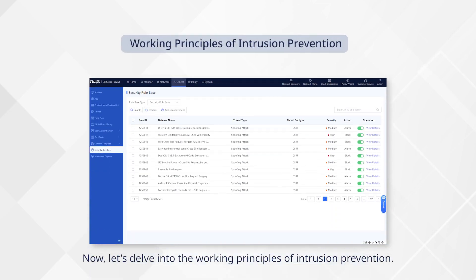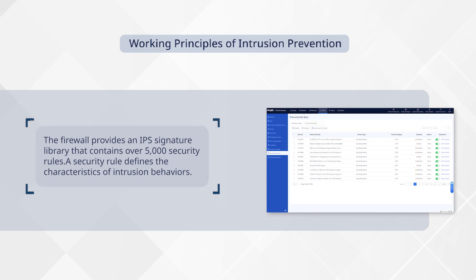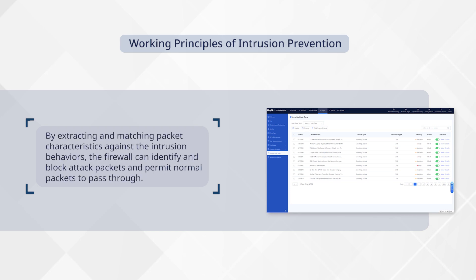Now, let's delve into the working principles of intrusion prevention. The firewall provides an IPS signature library that contains over 5,000 security rules. A security rule defines the characteristics of intrusion behaviors. By extracting and matching packet characteristics against the intrusion behaviors, the firewall can identify and block attack packets and permit normal packets to pass through.